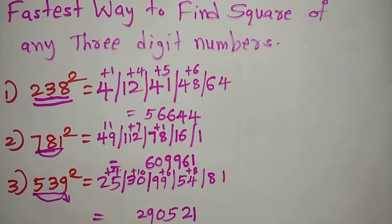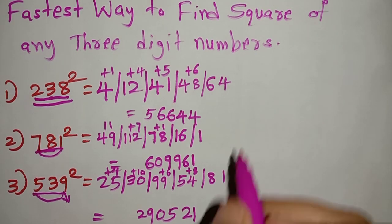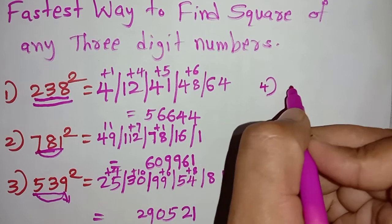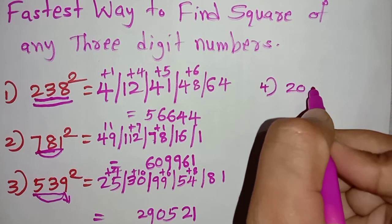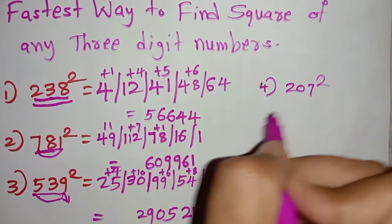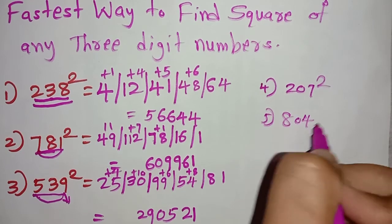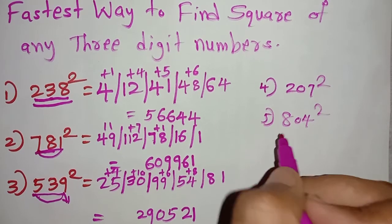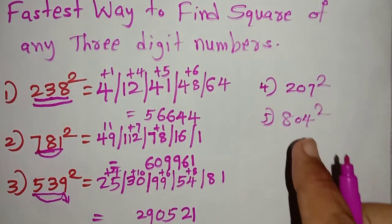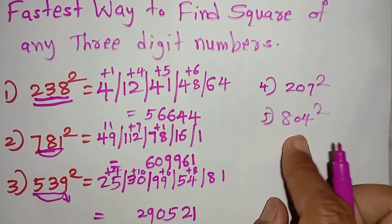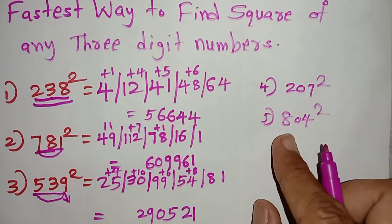If there is a 0 in the middle, that is a different case. For example, 207 squared or 804 squared — this method I will tell you in the next video.